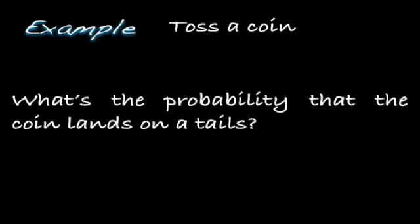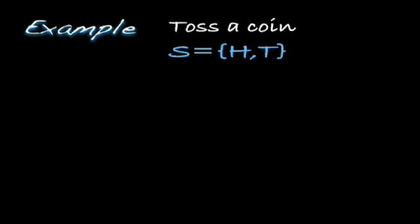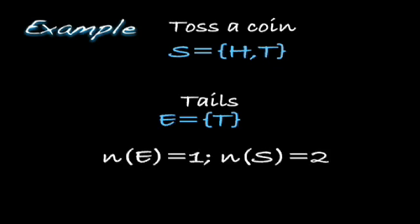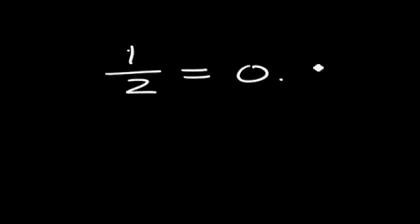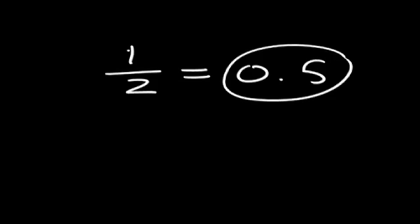Tossing a coin — what's the probability that the coin lands on tails? The sample space is associated with H and T, the only two outcomes possible when you toss a coin. The event of tails corresponds to the one outcome, which is T. Since there's one outcome associated with tails out of two possible outcomes, there is one outcome out of two possible outcomes consisting of tossing a tails. Numerically the answer is 0.5. The probability of tossing tails equals the probability of tossing heads — they are both 0.5.